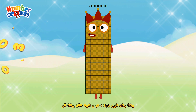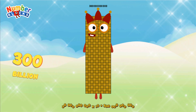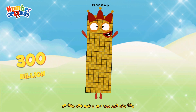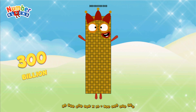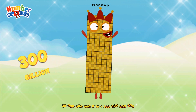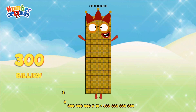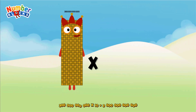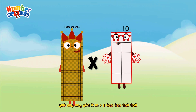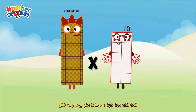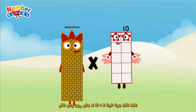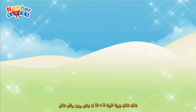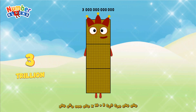300,000,000,000 x 10. 300 Billion multiplicated by 10 equals 3 Trillion.